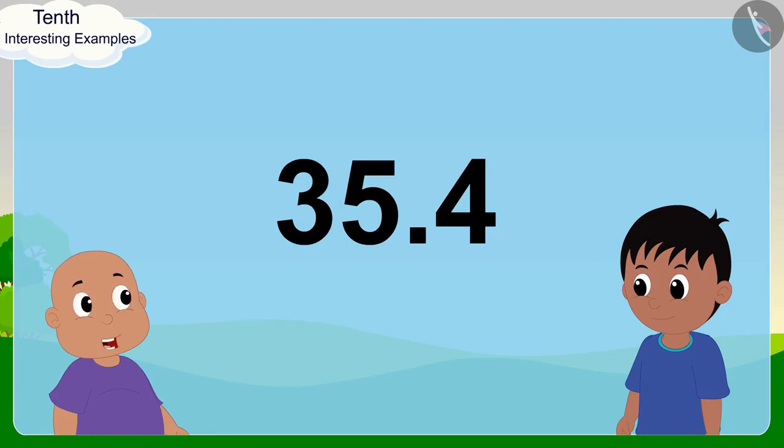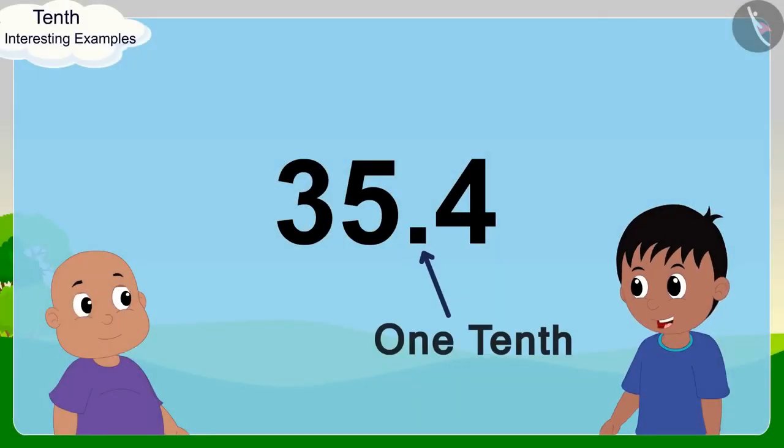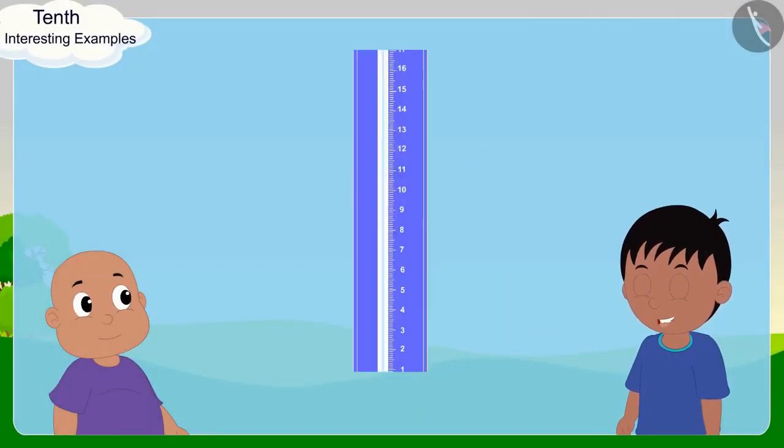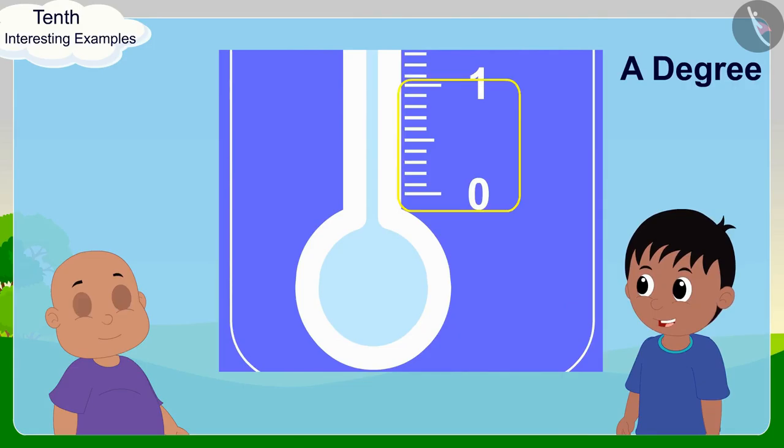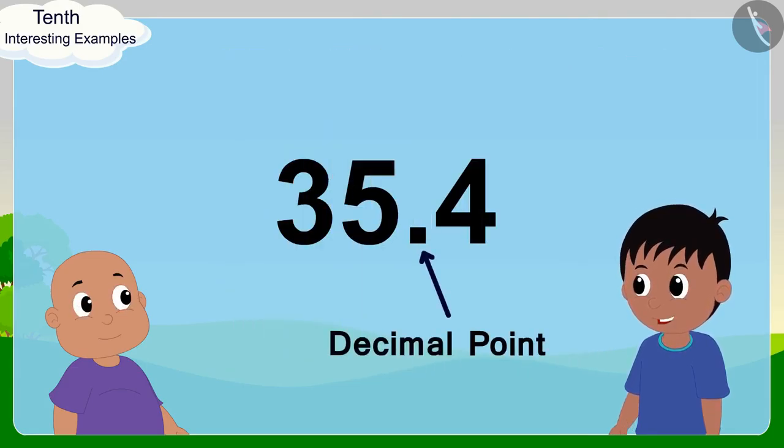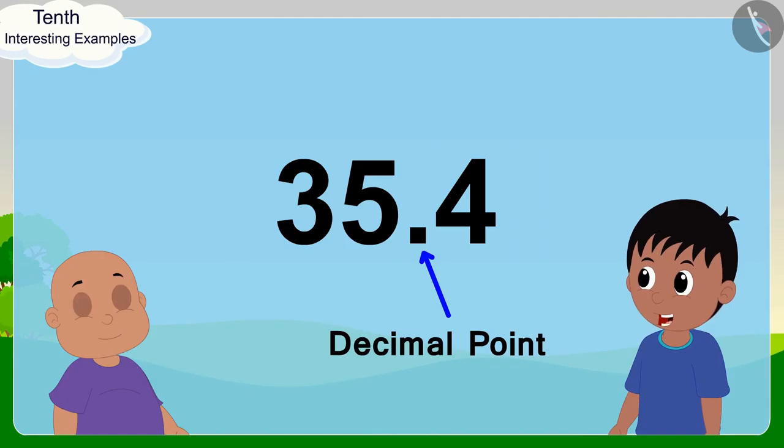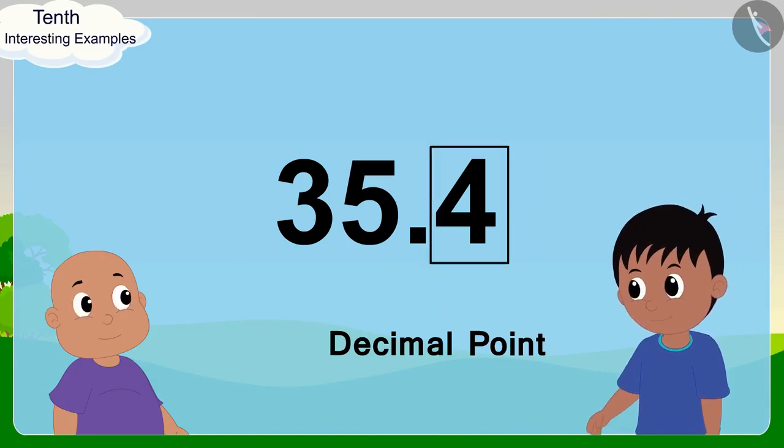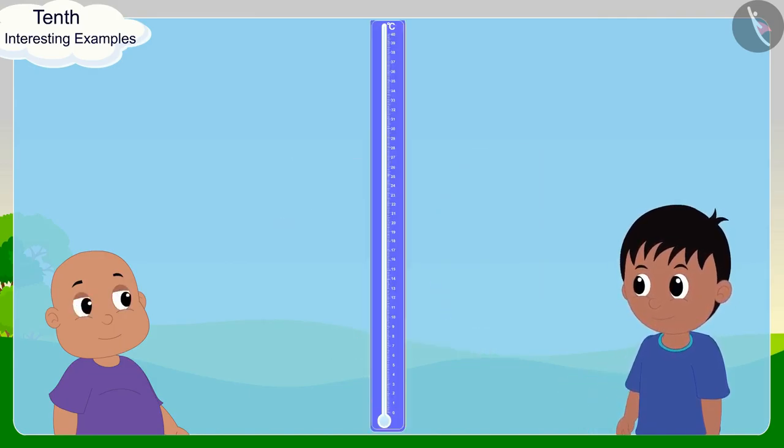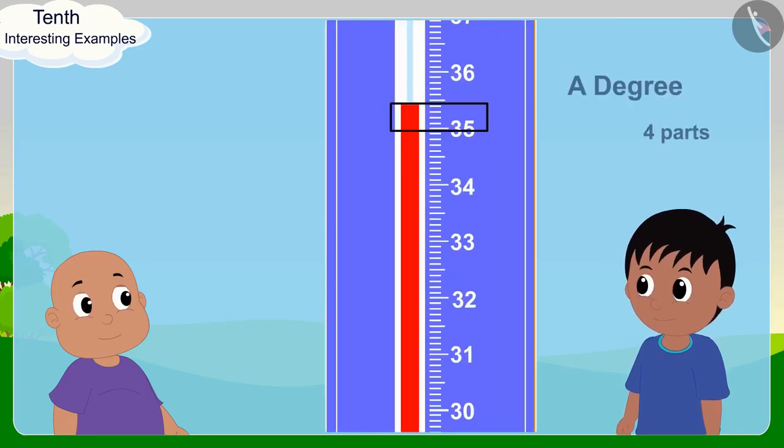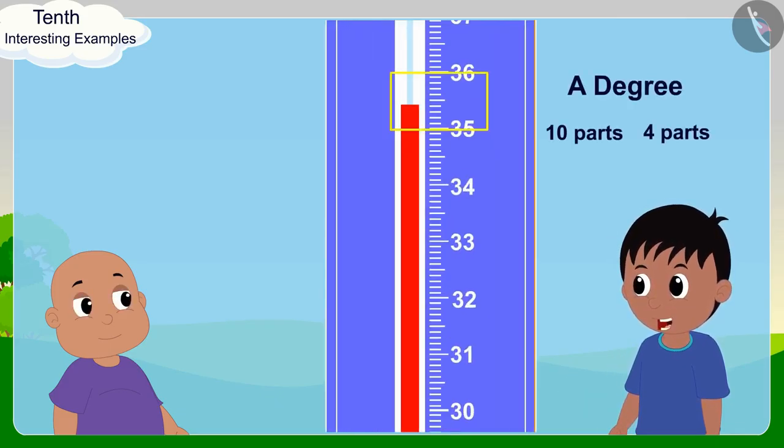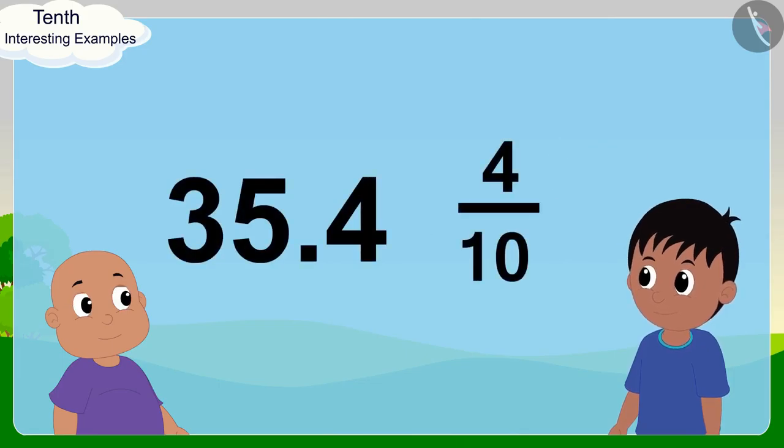'Okay, I understood degree Celsius. 35.4 degrees Celsius, Raju? 35 is fine, but what is this point for?' Bablu asked. '0.4 indicates that a degree is being divided into 10 equal parts, and because the number after the decimal point is 4, we can say that here we are taking 4 out of the 10 parts of a degree. In this way we can also write 0.4 as 4/10 in the form of a fraction,' Raju explained to Bablu.